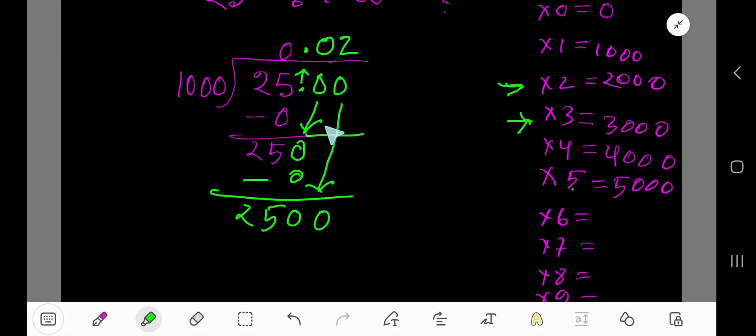1000 goes into 2500 two times. And 2 times 1000, we get 2000. If I subtract, then I will get 500.